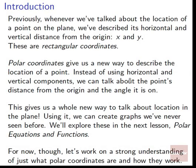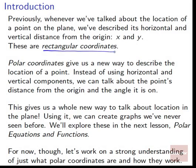Previously, whenever we've talked about the location of a point on the plane, we've described its horizontal and vertical distance from the origin — X and Y, how much we go out horizontally, how much we go out vertically. We call them rectangular coordinates because if we look at a horizontal and a vertical put together, we're just drawing out a rectangle on the plane.